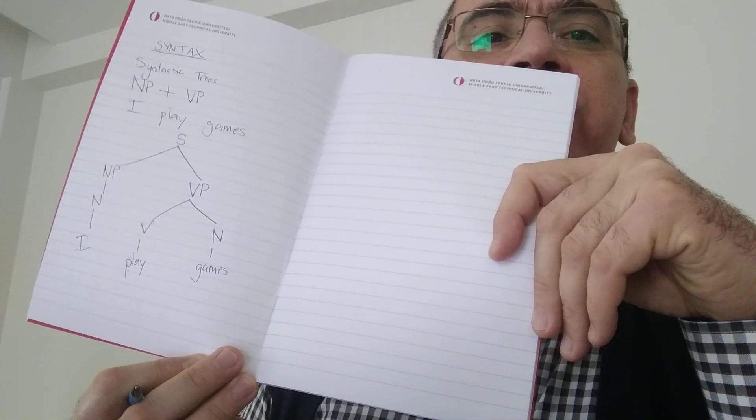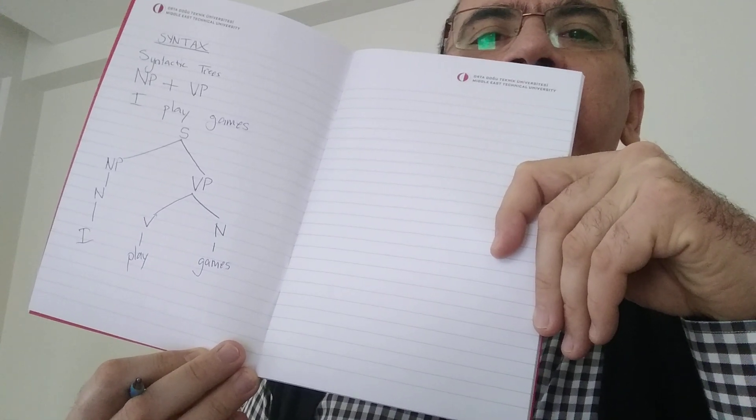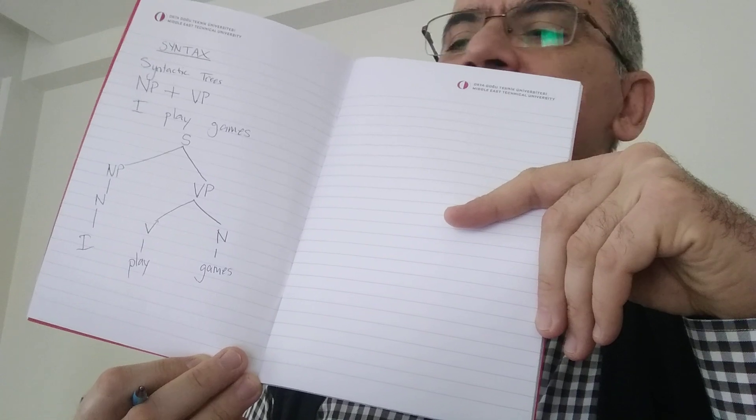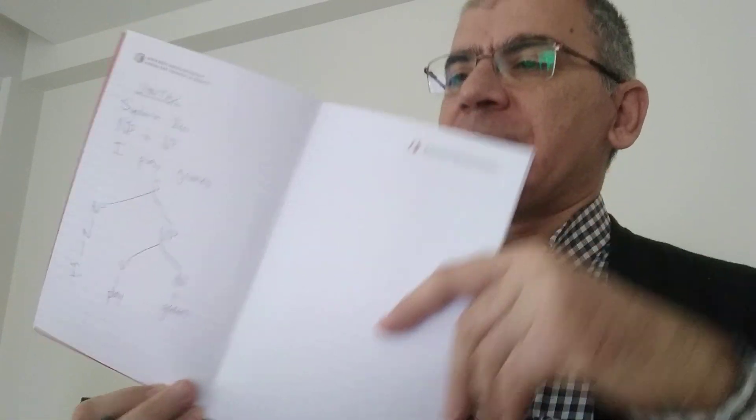This is a very simple sentence. We don't have any prepositions or articles here. But when we add articles and prepositions, it's different. Let me do another sentence: I go to school. What do we have as an extra?